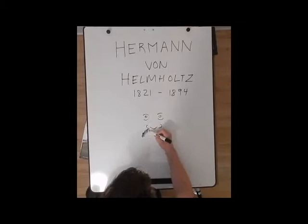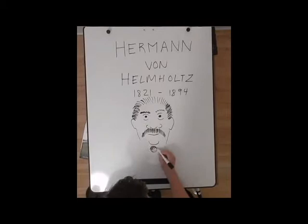Hermann Ludwig Ferdinand von Helmholtz was born in Potsdam, Prussia on August 31, 1821. He died September 8, 1894.